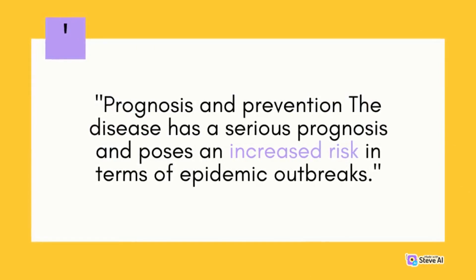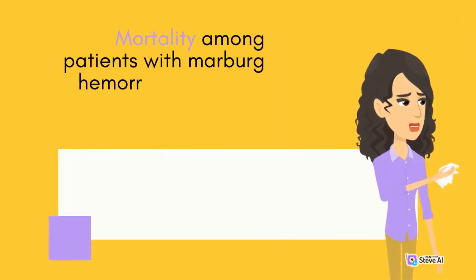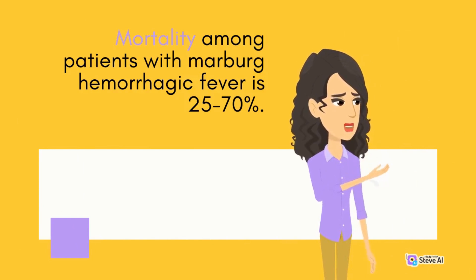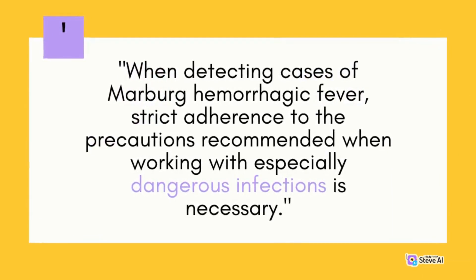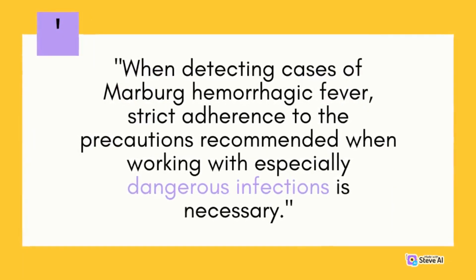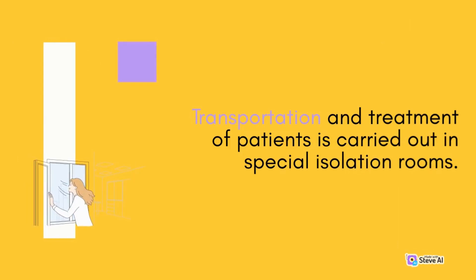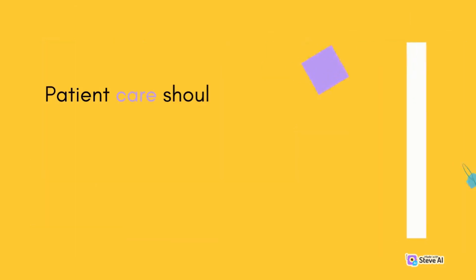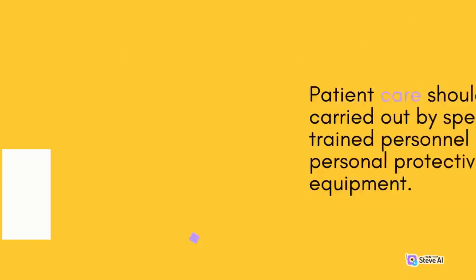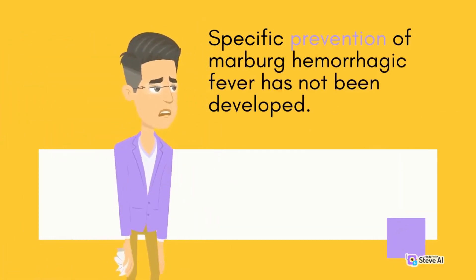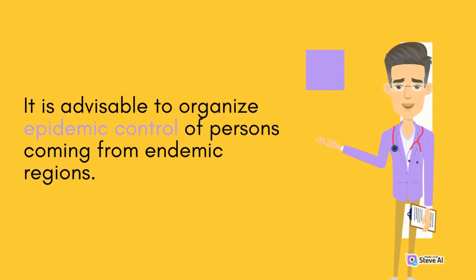The disease has a serious prognosis and poses an increased risk of epidemic outbreaks. Mortality among patients with Marburg Hemorrhagic Fever is 25 to 70%. When cases are detected, strict adherence to precautions for especially dangerous infections is necessary. Transportation and treatment are carried out in special isolation rooms by specially trained personnel using personal protective equipment. Specific prevention has not been developed, and epidemic control of persons from endemic regions is advisable.